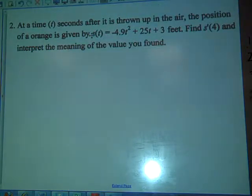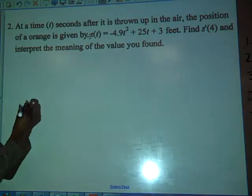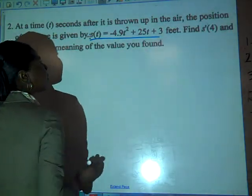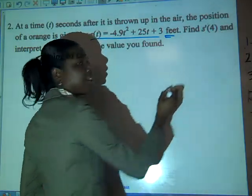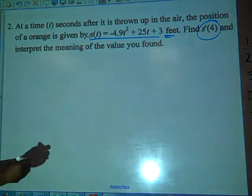At a time T seconds after it's thrown up in the air, the position of the orange is given by S(T) equals negative 4.9T squared plus 25T plus 3 feet. Find S prime of four and interpret the meaning of the value you found.